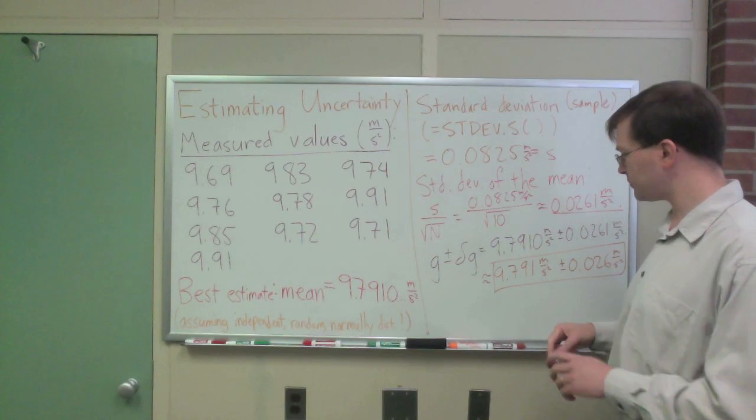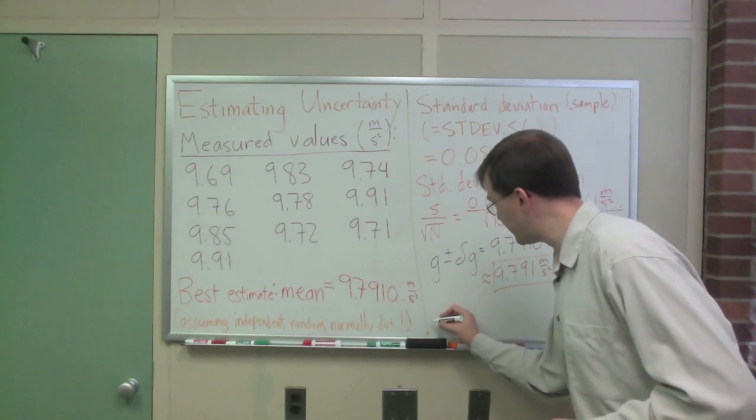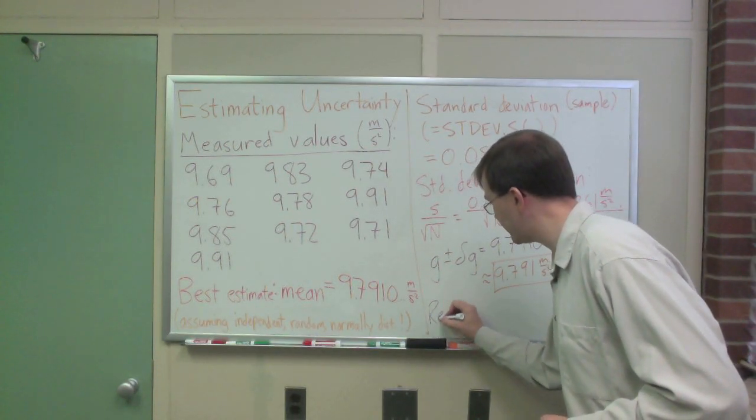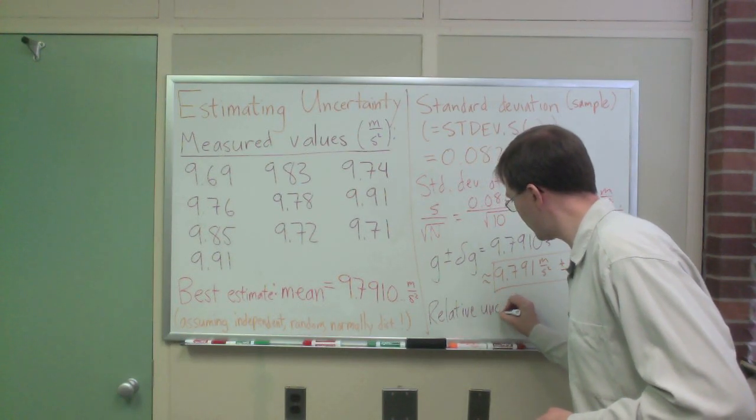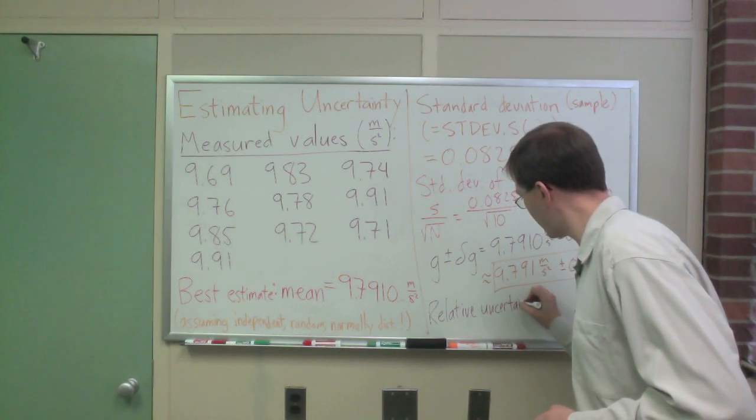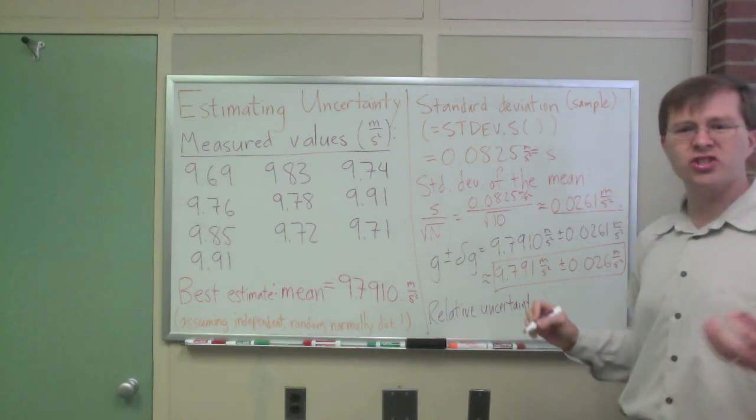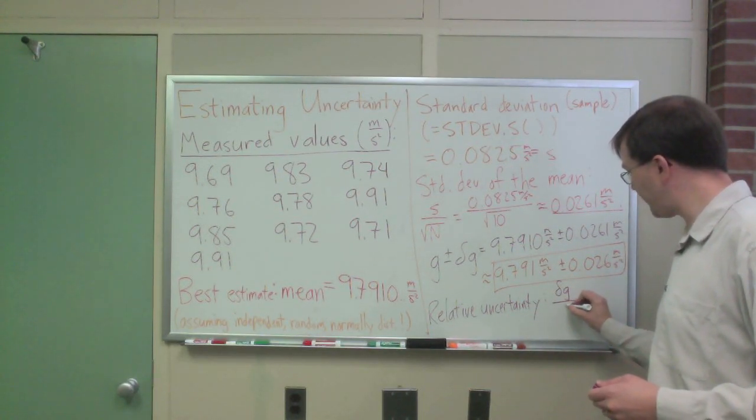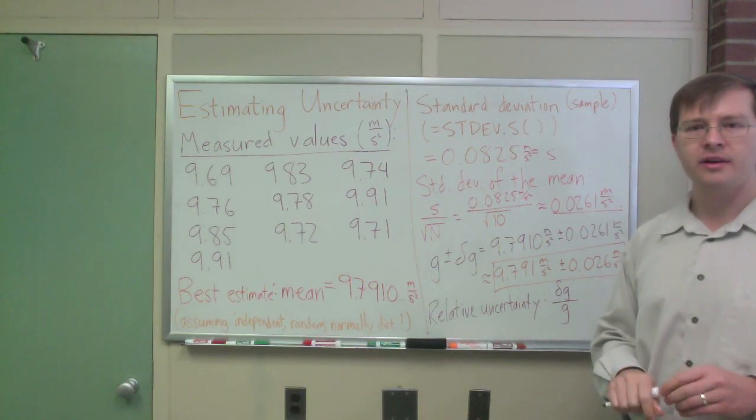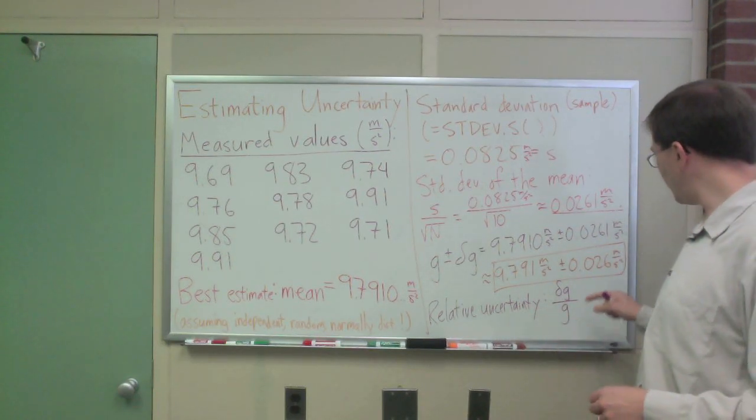Relative uncertainty, relative error, relative uncertainty is given by just the ratio of my uncertainty in g, delta g, divided by g itself. It's just that ratio. And if you look at it, when I work this out, I get that this is, well, this is 0.261 divided by, don't use the rounded off versions, use the extra sig figs.